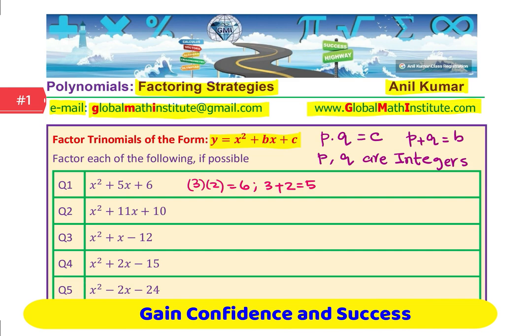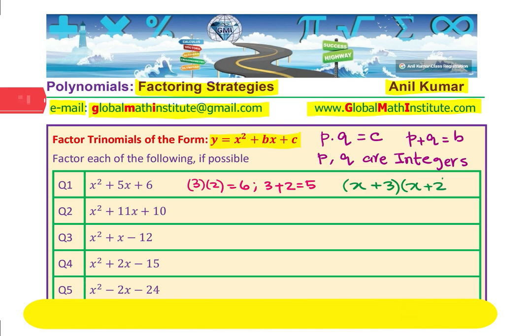You can now factor it. We could write this as equal to x plus 3 times x plus 2. Order does not matter. You can write any one before or after. Product remains the same, it's commutative property of products. That is how simple it is.